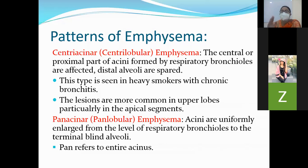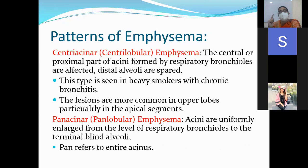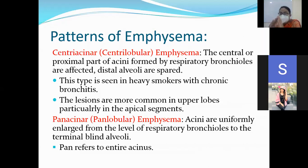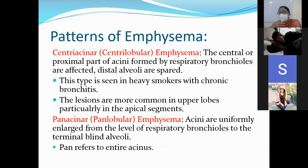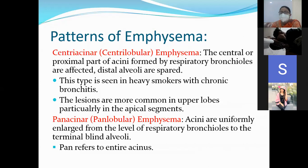Keep in mind: in emphysema, the definition, different types, and location are very important. The centriacenar type involves the central and proximal part — the respiratory bronchioles — and is mostly seen in heavy smokers. Location is very important: it involves the upper lobe of the lung, the apical segment. In a scenario where a heavy smoker presents with destruction of alveolar wall and dilatation of air spaces, the centriacenar type is mostly involved, affecting the apical segment.